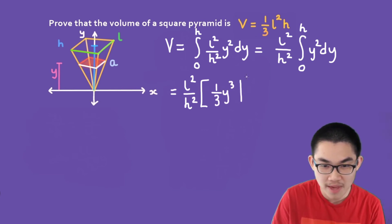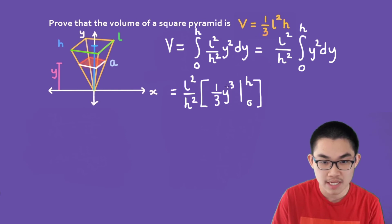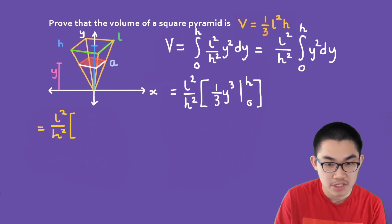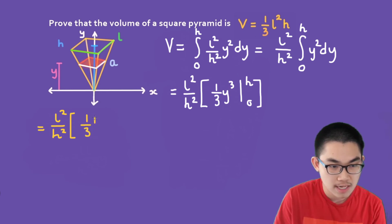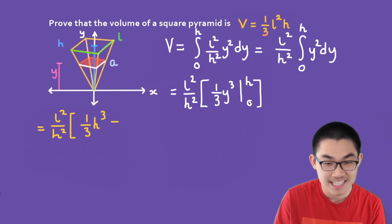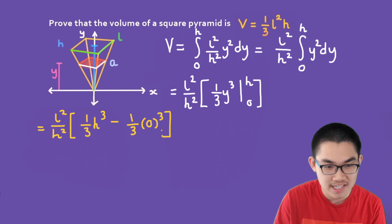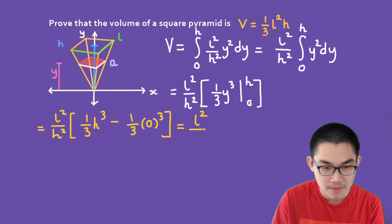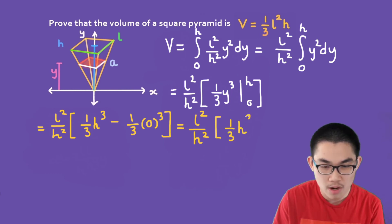Don't forget to evaluate from 0 to H. Substituting the bounds: L² divided by H² times [1/3 · H³ minus 1/3 · 0³]. Since 0³ equals 0, we get L² divided by H² times 1 over 3 times H cubed.